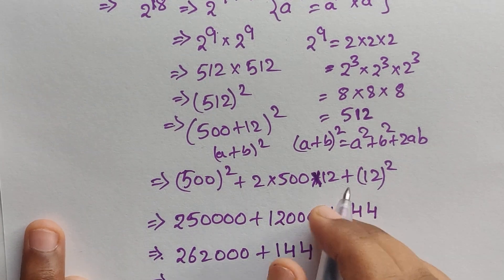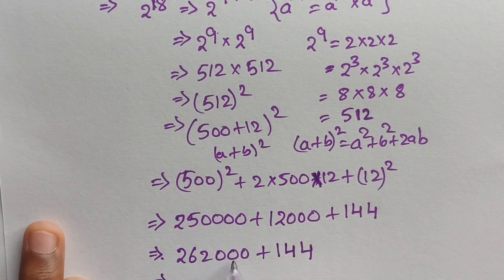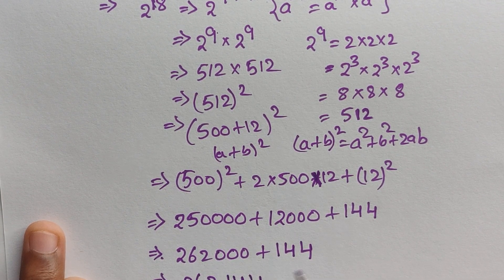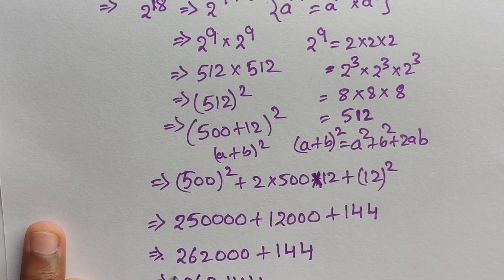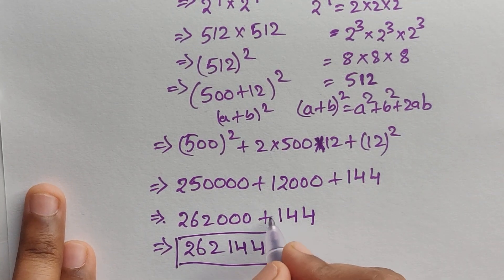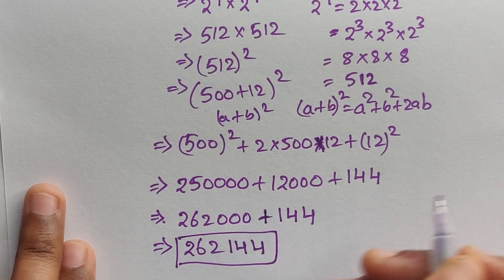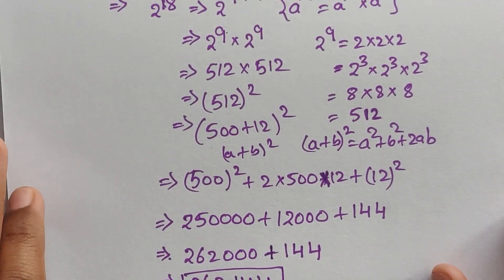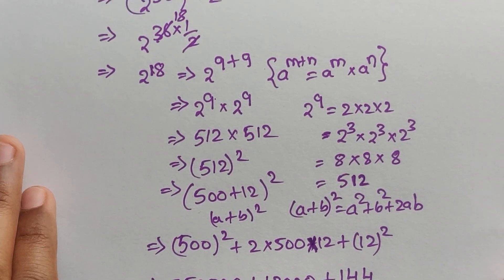Adding the three numbers: 250000 plus 12000 plus 144 equals 262144. So the final answer is 262144. Thank you for watching.